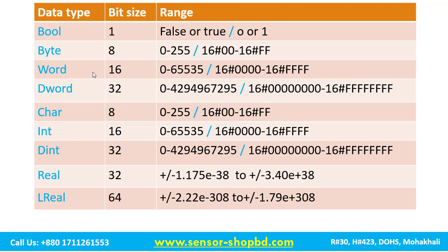For a Word, we have 2 to the power of 16. In hexadecimal that is 4 hex digits. For Double Word, it is 2 to the power of 32. Character is 8 bit. Integer is 16 bit. Double Integer is 32 bit. And Real is also 32 bit.